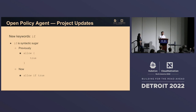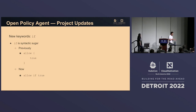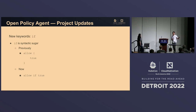We also introduced the `if` keyword. This caused a little confusion in the community because people thought we were introducing new logic. The `if` keyword is actually just syntactic sugar. With the previous method you'd write `allow = true` with the body equal to true; now you can just write `allow if true`. It's just an easier, cleaner way to write things.